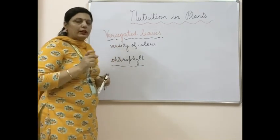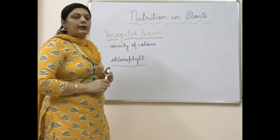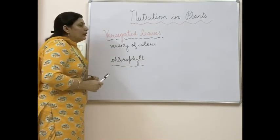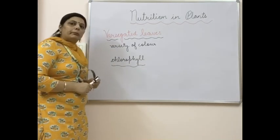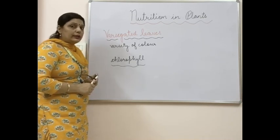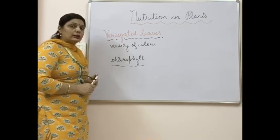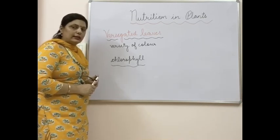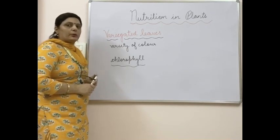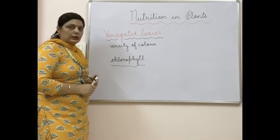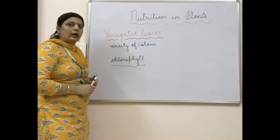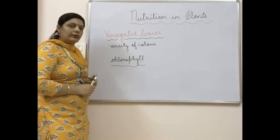This term 'variegated leaf' is not given in your NCERT, but there was a question asked by Bhujo: what about plants which have a variety of colors on their leaves — can they do photosynthesis? Yes, those leaves also carry out the process of photosynthesis because of the presence of chlorophyll along with other pigments in them.